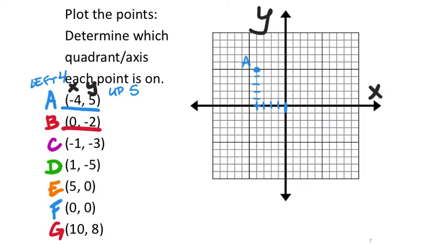Point B is at 0, negative 2 — the x value is 0, so I'm at the origin. Then the y value is negative 2, so I go down 1, 2 — that's point B. Point C is at negative 1, negative 3 — to the left 1 for x, then down 3: 1, 2, 3 — and that's point C.